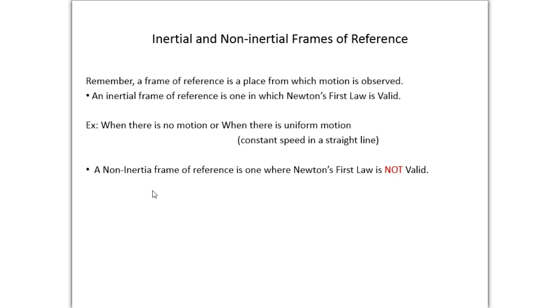A non-inertial frame of reference is one in which Newton's first law is not valid, in which it doesn't apply. So when you get acceleration. So in the last example, Newton's first law is not applying there. The object is no longer at a steady state of motion. So the bus slows down. It's no longer considered an inertial frame of reference for Newton's first law, because now you've changed it. It's not a constant speed anymore.